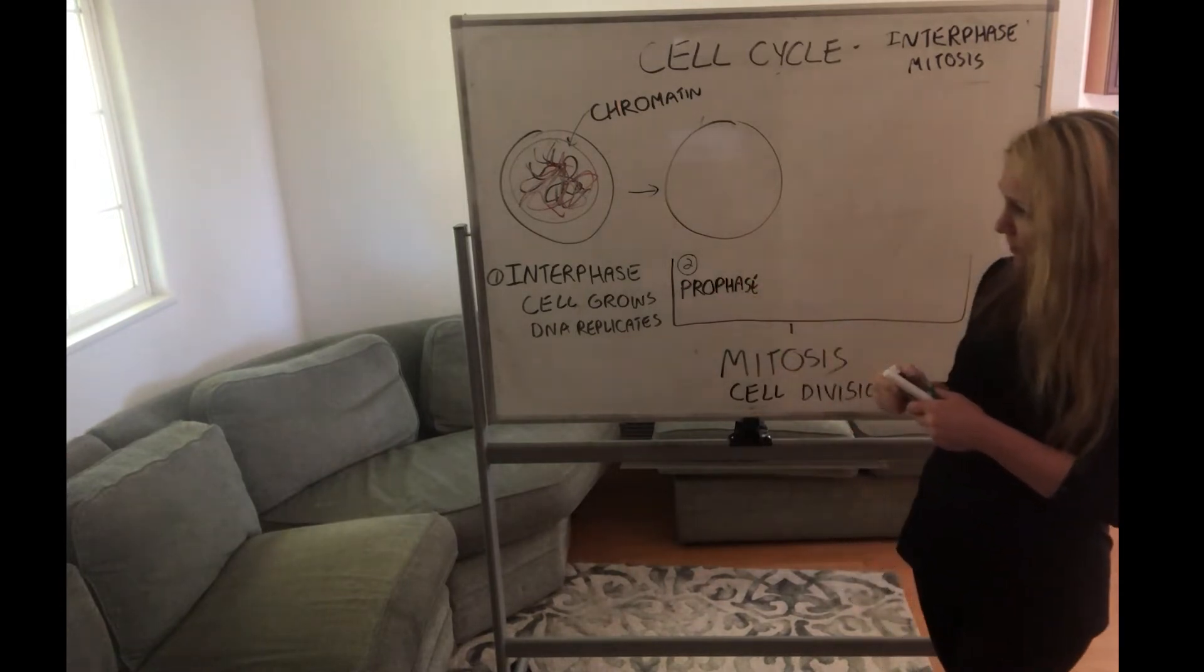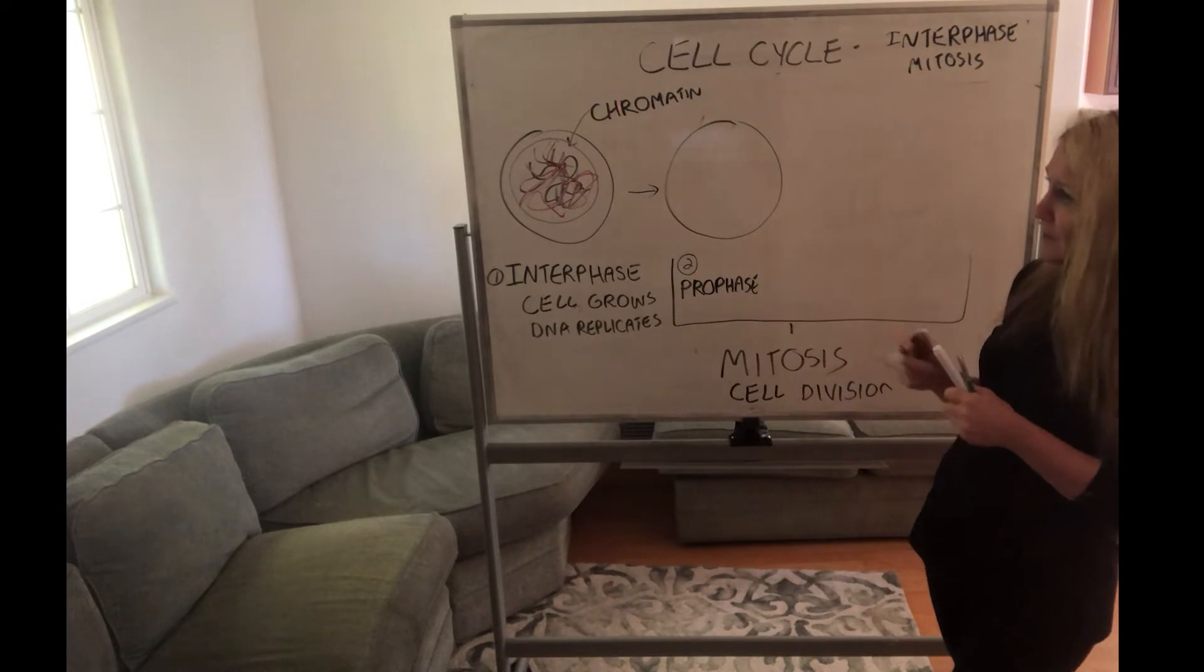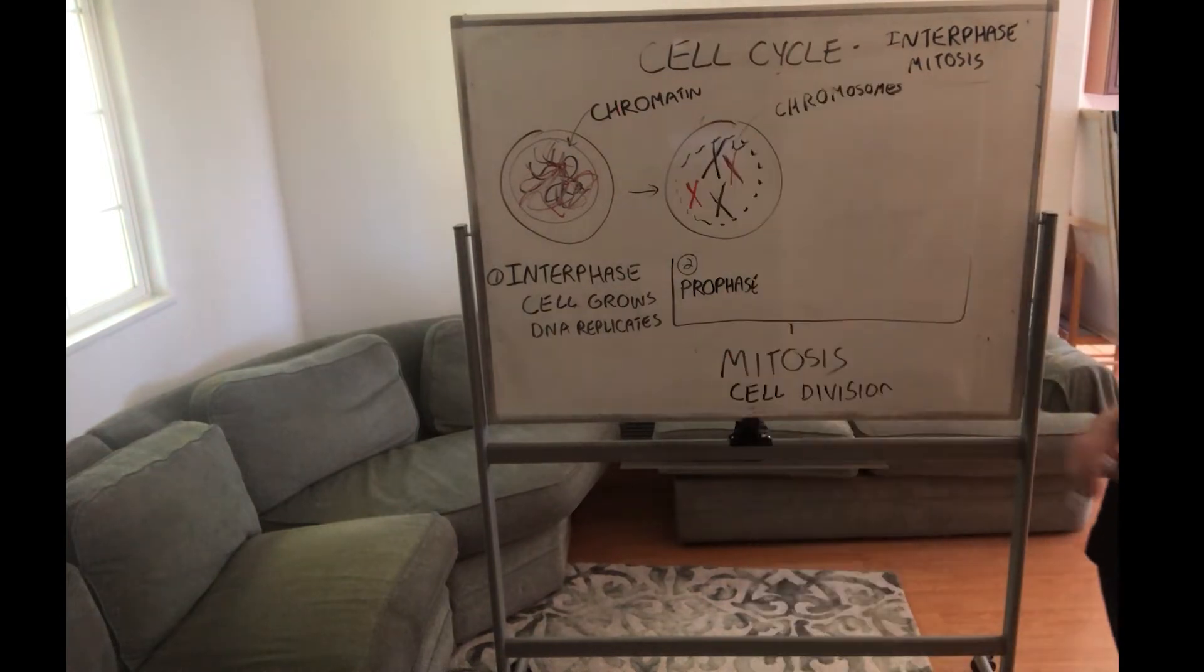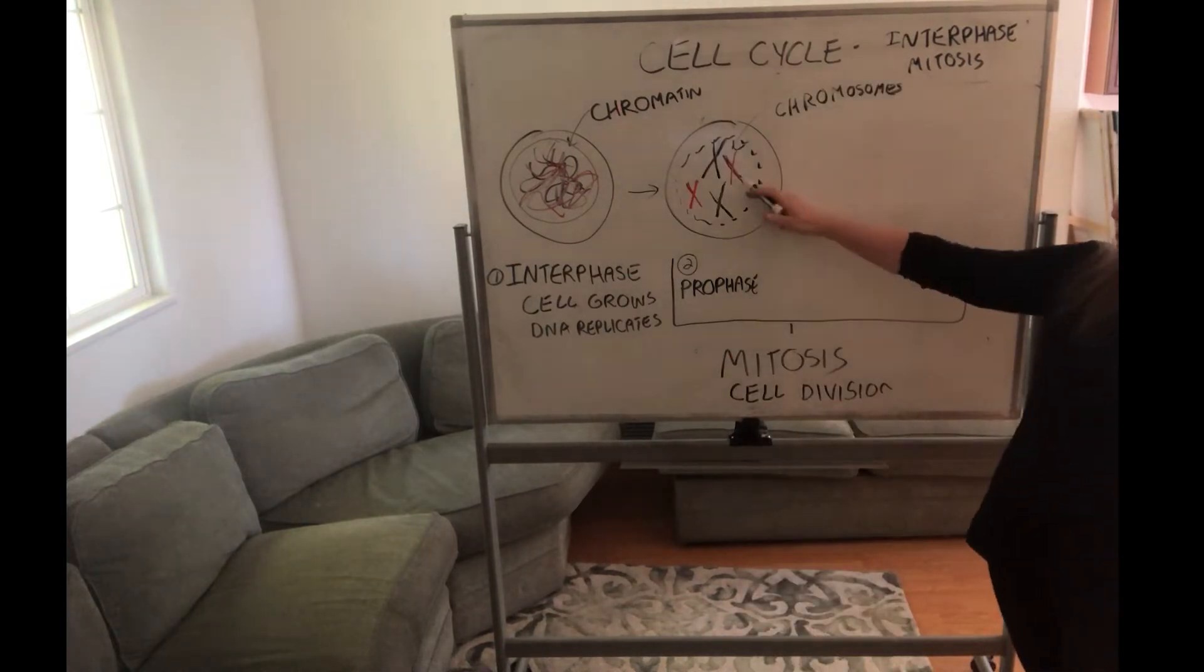Prophase now is a phase when DNA starts to condense. This is prophase. Now chromosomes appear. They're formed from chromatin.